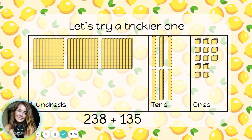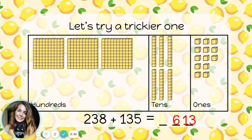Whatever's left is my answer. I can see hundreds, tens, and ones here, so I know I'm going to have an answer that has hundreds, tens, and ones. Let's see — I have 13 ones, six tens, and three hundreds.